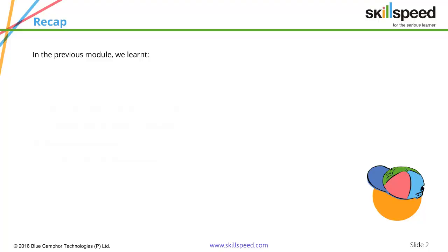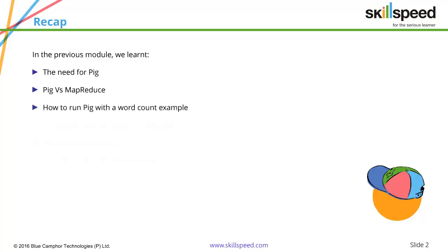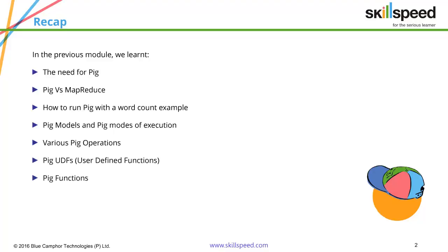In the previous module, we learned about the scripting tool called Pig. We understood the need of Pig, compared it with MapReduce, and even ran our famous word count example with Pig. Then we had an extensive set of lessons on the various Pig operations and also discussed advanced features such as user-defined functions in Pig.